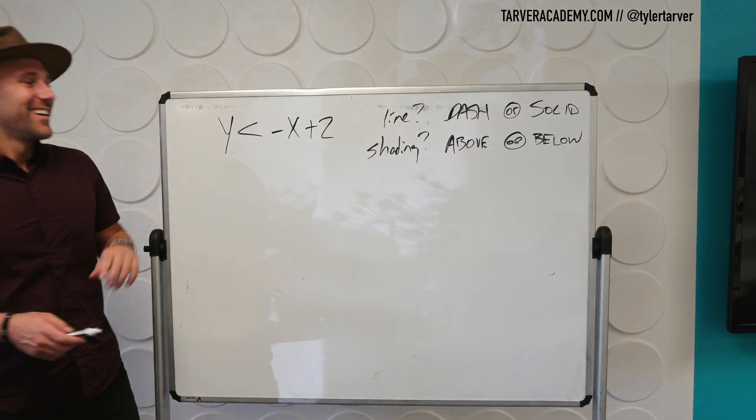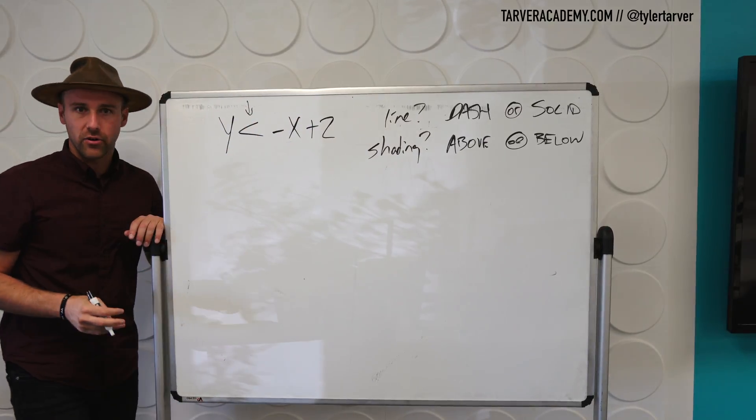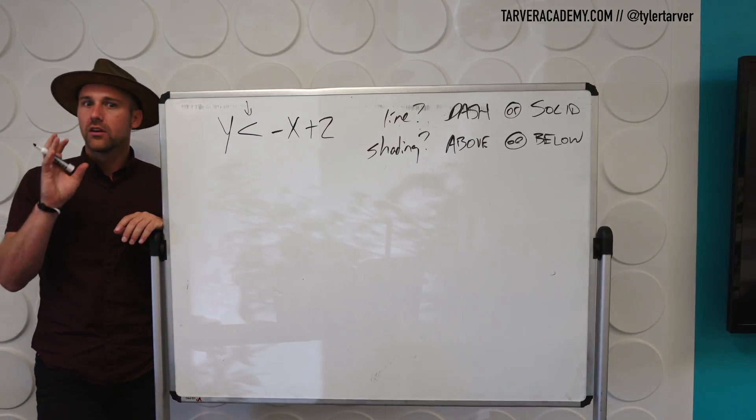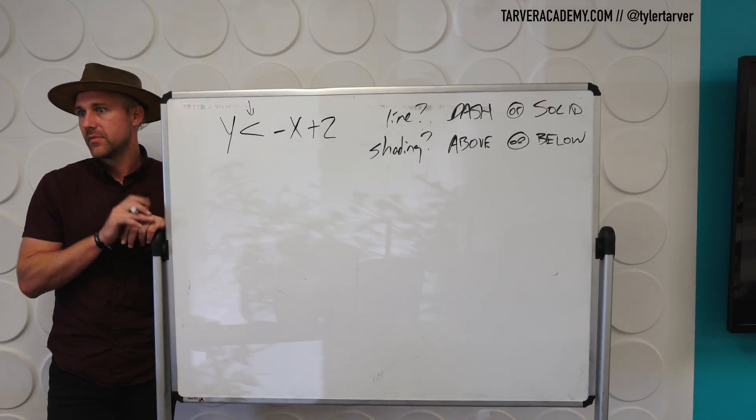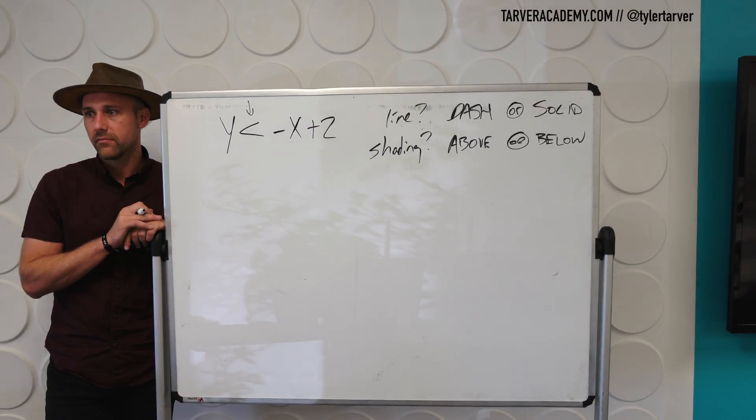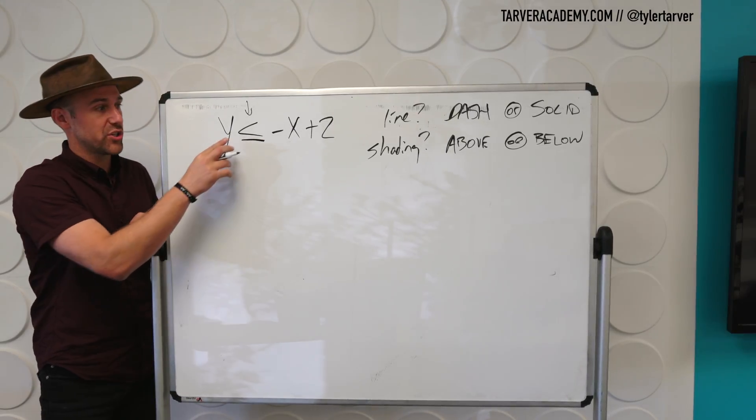Okay, so all we care about for the line part is this right here, our greater than or less than symbol. Is this going to be a solid line or a dash line? Dash. Why? Because it's not equal to. Because there's not that little line right there. If I had a line, it would say or equal to.